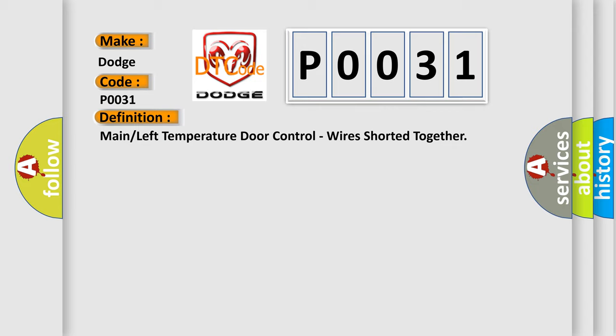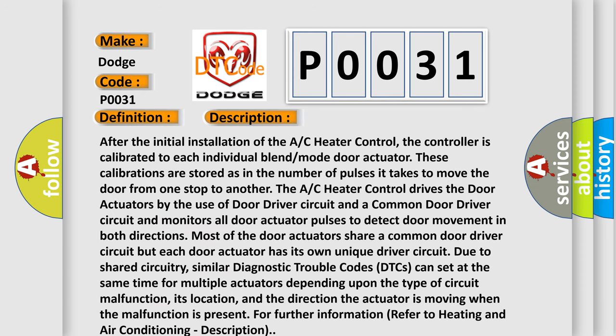Here is a short description of this DTC code. After the initial installation of the AC heater control, the controller is calibrated to each individual blend mode door actuator. These calibrations are stored as the number of pulses it takes to move the door from one stop to another. The AC heater control drives the door actuators using a door driver circuit and a common door driver circuit, and monitors all door actuator pulses to detect door movement in both directions. Most door actuators share a common door driver circuit, but each has its own unique driver circuit. Due to shared circuitry, similar DTCs can set at the same time for multiple actuators, depending on the type of circuit malfunction, its location, and the direction the actuator is moving when the malfunction is present. For further information, refer to heating and air conditioning description.